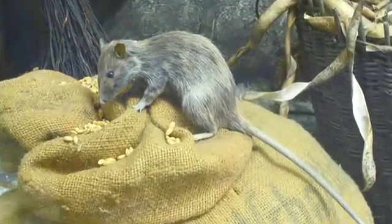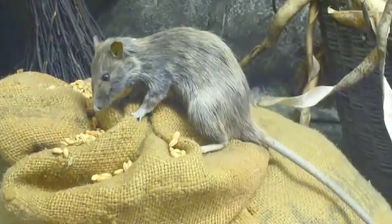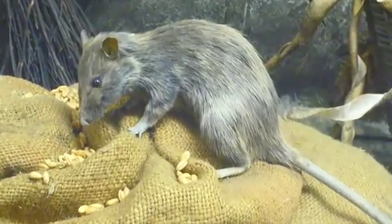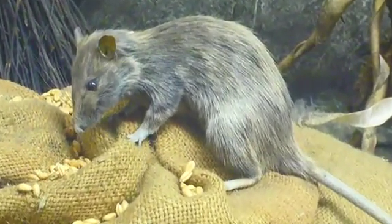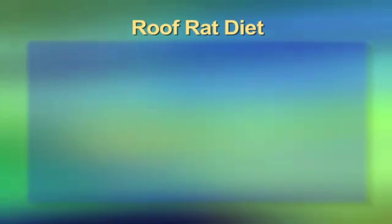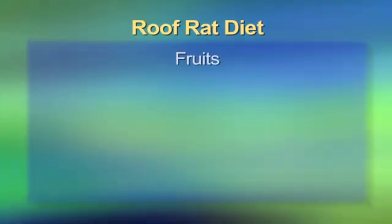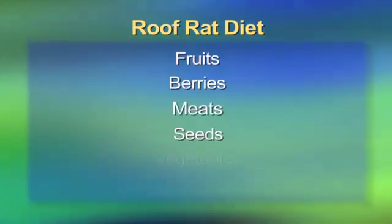Roof rats are black to brownish-gray and typically 7 to 10 inches in length. The roof rat nests in attics, false ceilings, dead fronds of palm trees, and upper portions of buildings. The roof rat's diet consists of fruits, berries, meats, seeds, vegetables, and eggs.